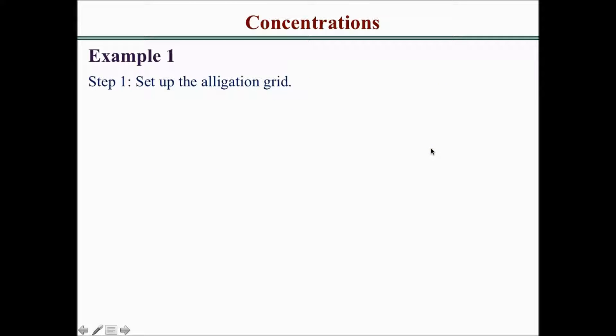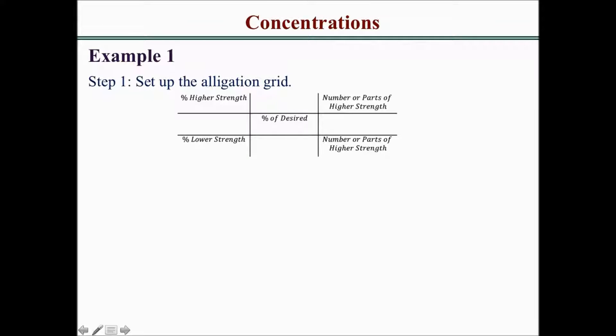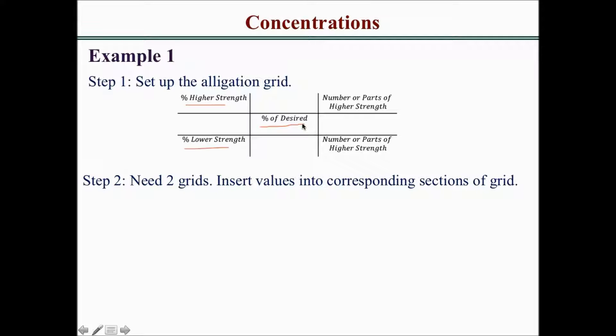You want to set up the alligation grid, which has the percentage of higher strength on the top left, percentage of lower strength on the bottom left, and percentage of the desired strength in the middle. This equation is a little different — you need two grids because you are adding four different concentrations.